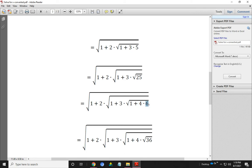Next again we write 6 as root over 36. That is our equation becomes 1 plus 2 dot root over 1 plus 3 dot root over 1 plus 4 dot root over 1.